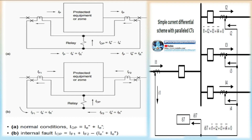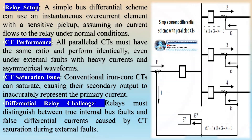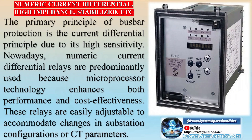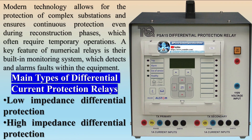Busbar protection systems may also incorporate additional tripping criteria to enhance reliability and security, such as check zones to prevent false trips due to malfunctioning disconnectors. Current direction supervision ensures that all currents in the bus are moving in the expected direction. A modern busbar protection system should also dynamically replicate the bus topology and include design flexibility to accommodate various bus arrangements. Busbar protection continuously monitors currents and uses differential protection principles to ensure fast and selective isolation of any faulty sections.